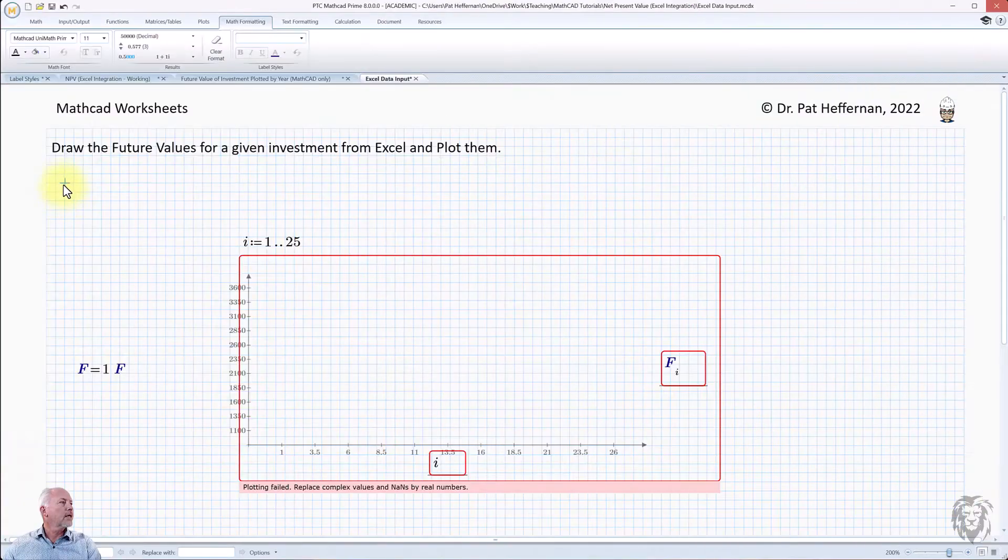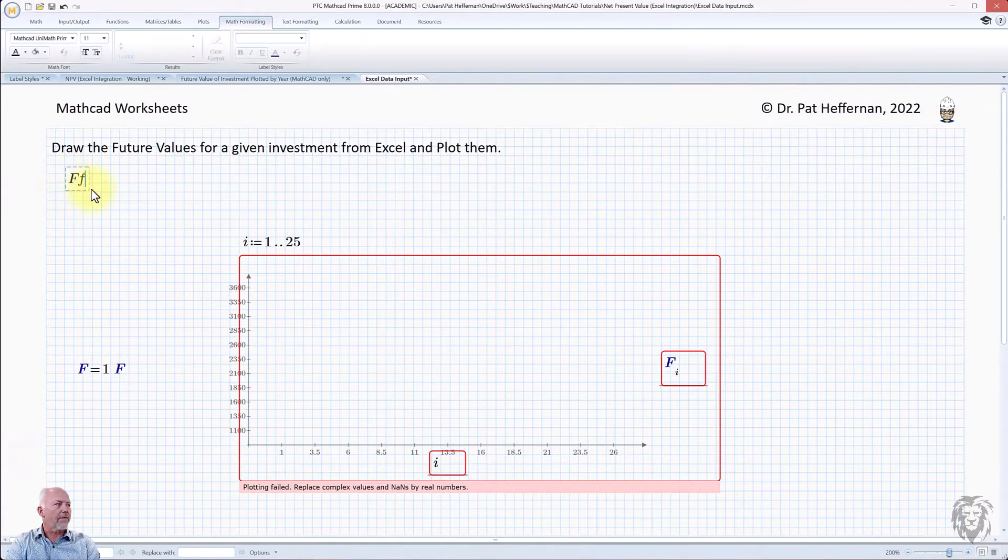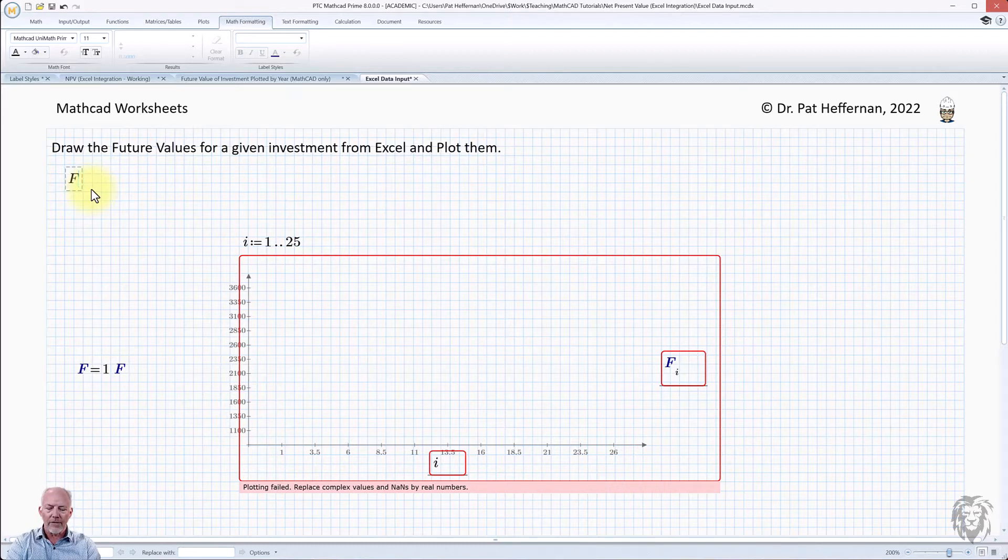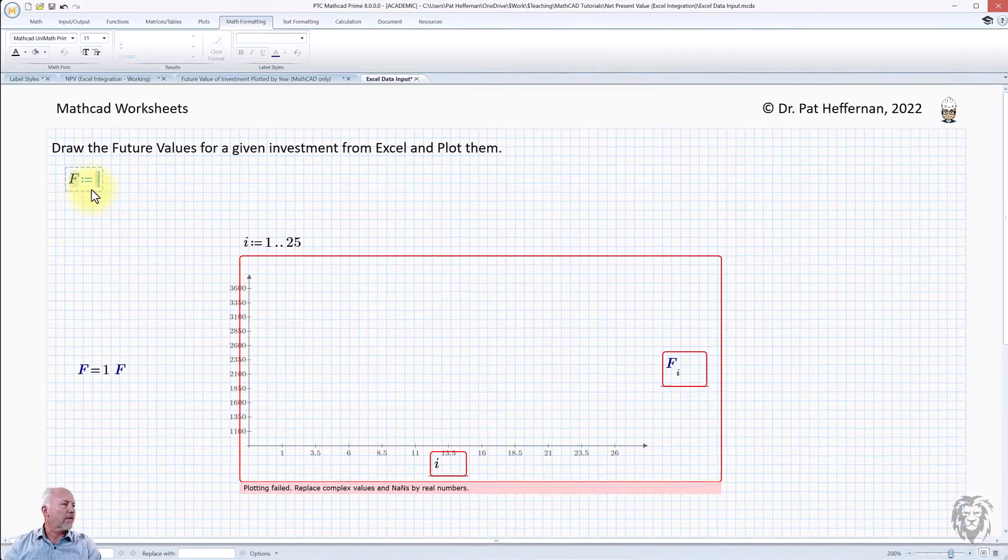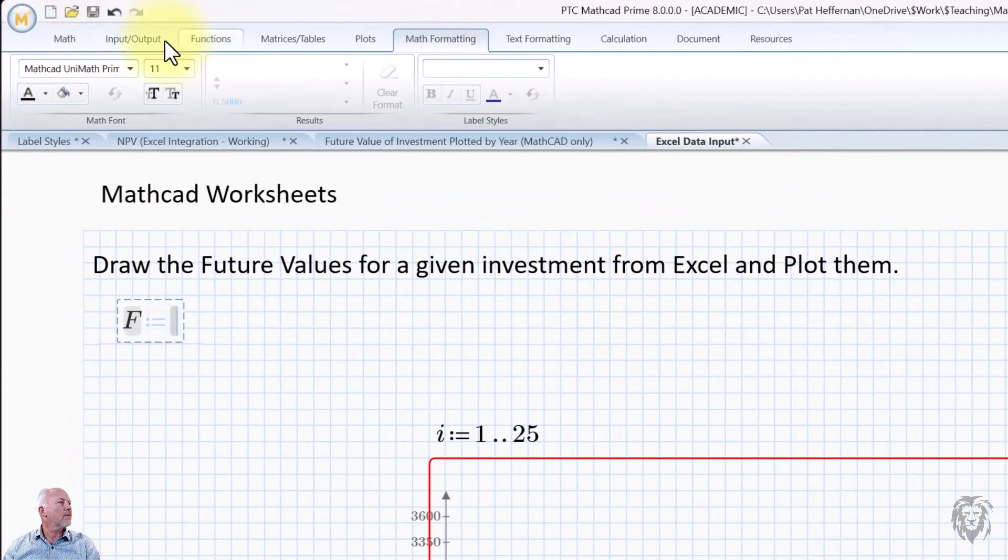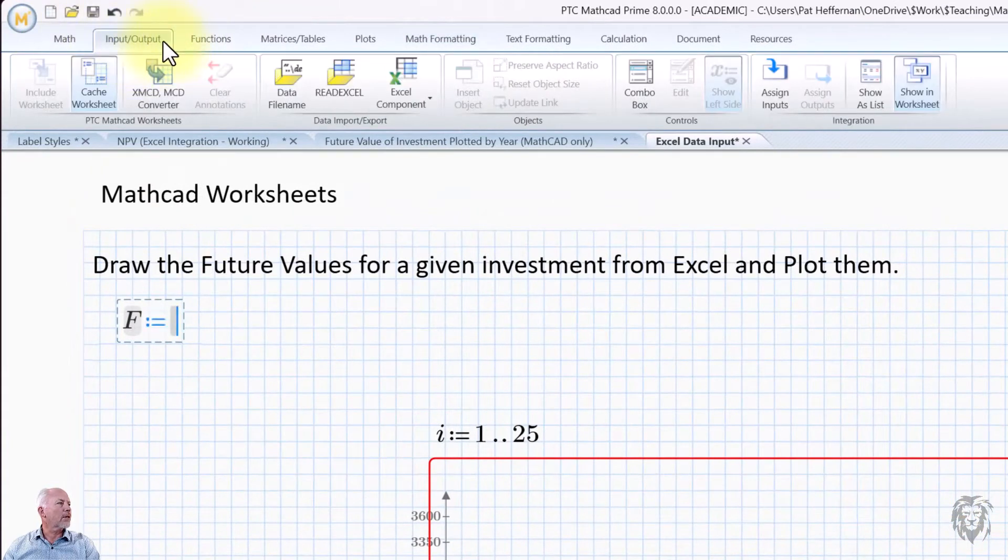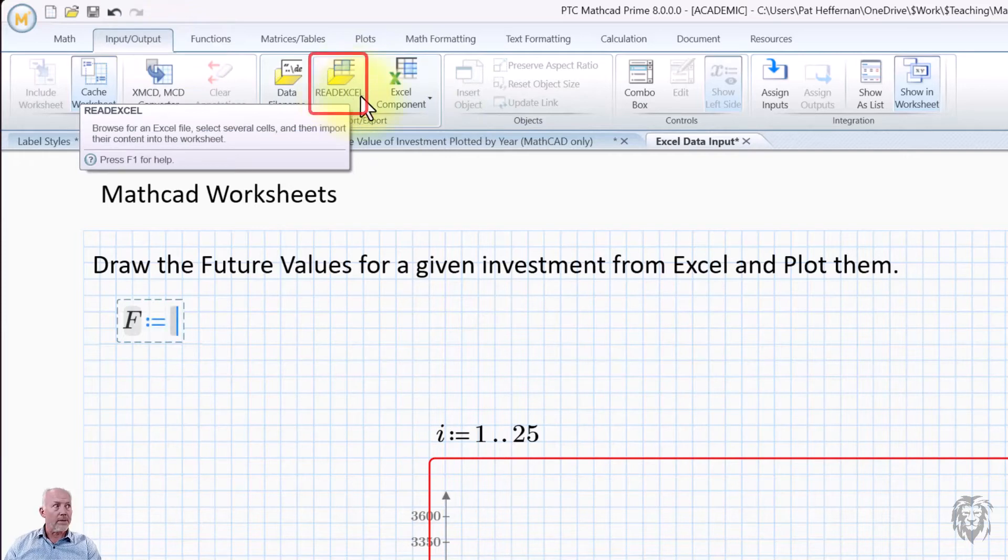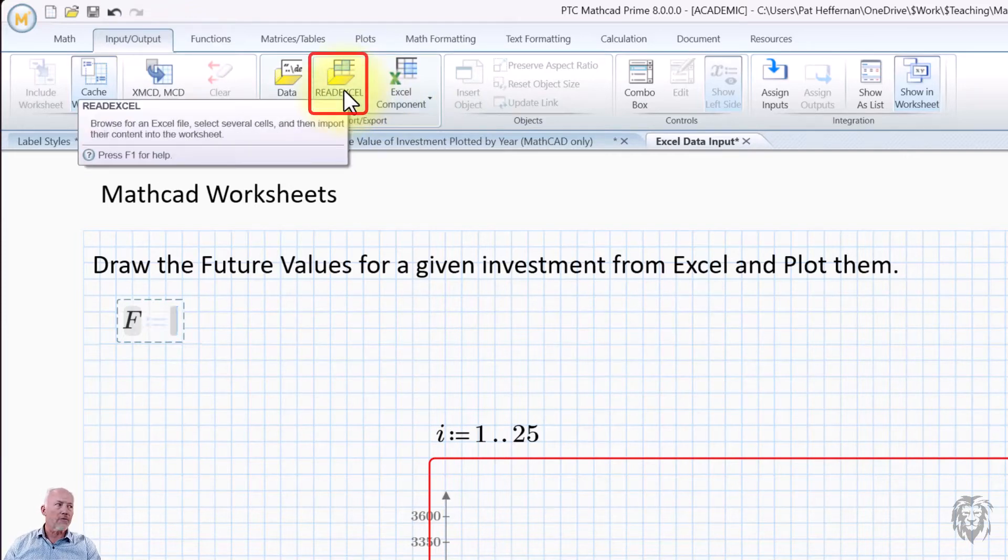The easiest way to do so, let's say we have a variable F that we want to inherit the values from our spreadsheet. We're going to define it as equal, and then we're going to go up here to our input output tab. In this case, we're going to read from Excel. So it's not the Excel component, it's a read from Excel.